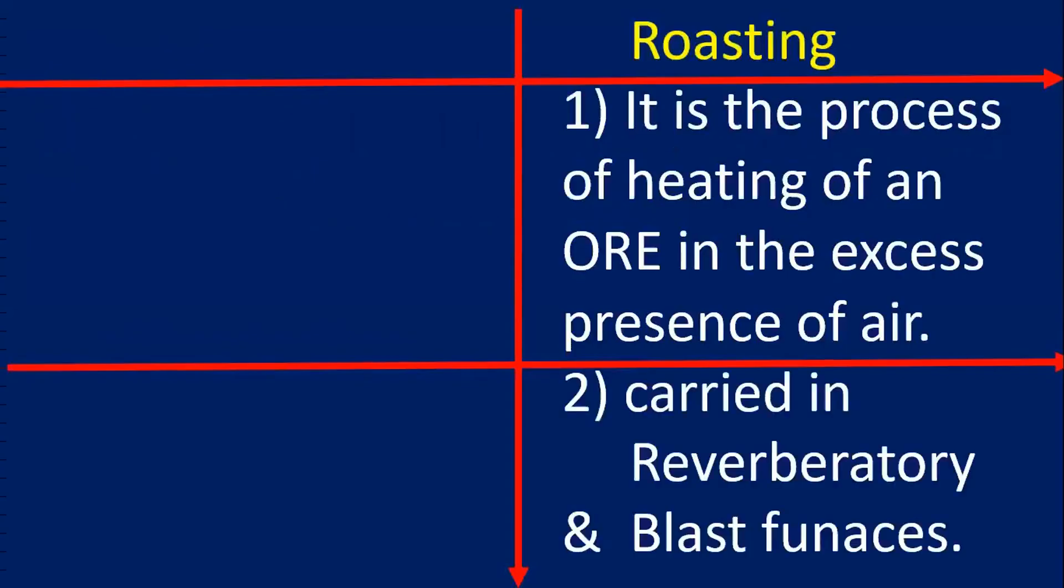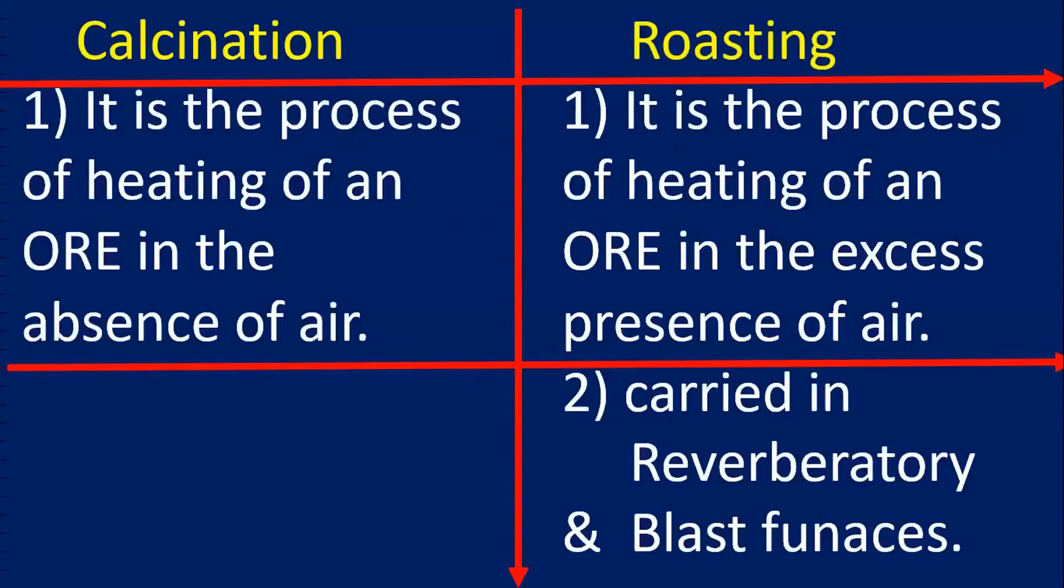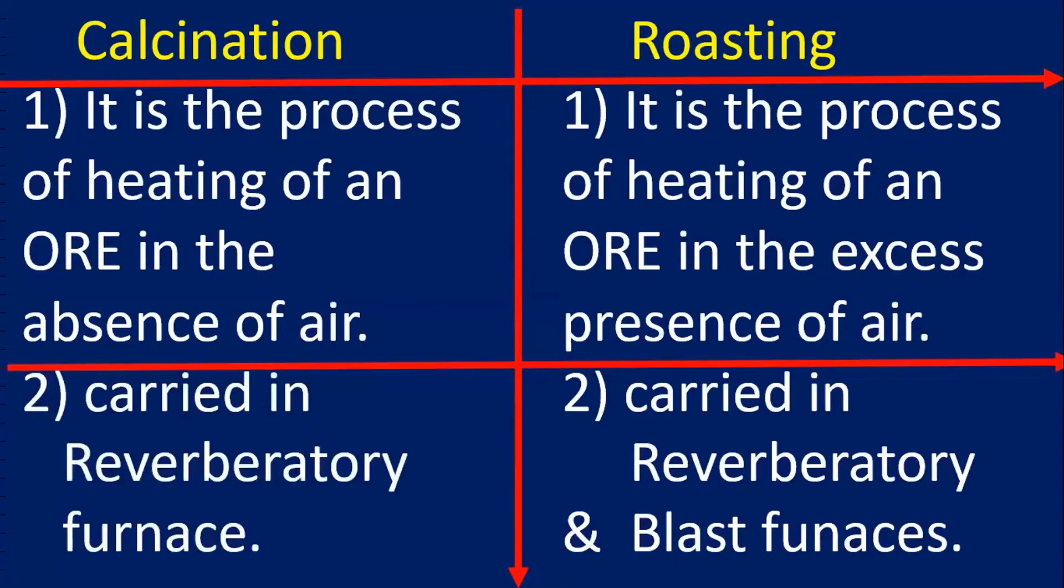Let us see the differences between calcination and roasting. Calcination is a process of heating of ore in the absence of air, but roasting is in the excess presence of air. The other difference is, calcination is carried out in reverberatory furnace, but roasting is carried out in any furnace.